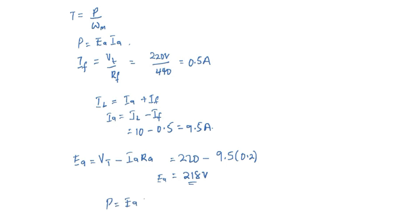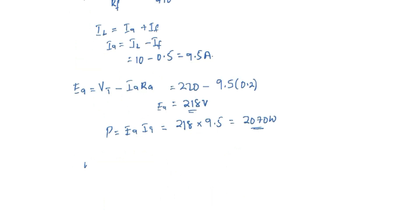Now the power is EA times IA, which is 218 multiplied by 9.5, and we are going to have 2070 Watt. Now the motor speed in rad per second is 2 pi times the speed in revolution per minute divided by 60. So this is 2 pi multiplied by 1800 all by 60.